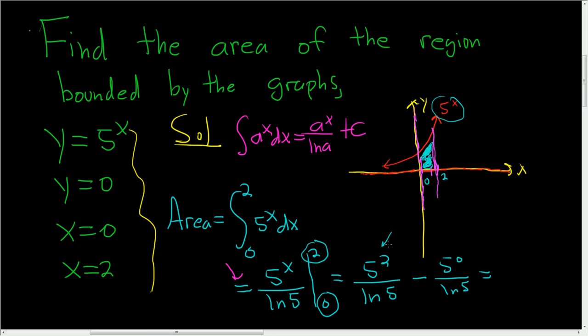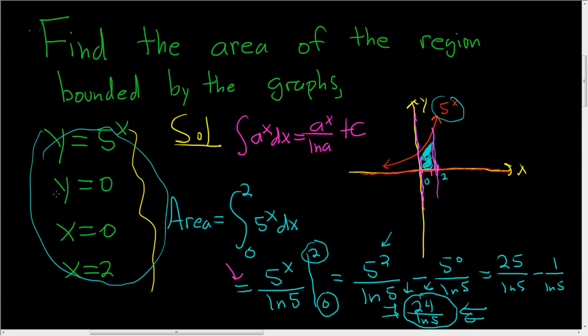5 squared is 25, so we end up with 25 over the natural log of 5. 5 to the 0 is 1, so 1 over the natural log of 5. And then 25 minus 1 is just 24. So the final answer, squeezing it in, is 24 over the natural log of 5. So there it is, that is the area bounded by the graphs of these guys here.